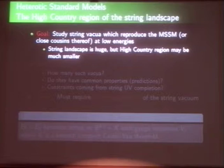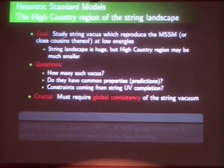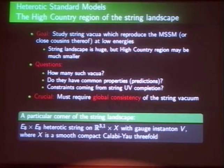Some of the questions are: how many such vacua? Do they have common properties? Can we make predictions? What are the constraints coming from the global UV completion? We are going to insist on global consistency of the string vacua — we're not looking for gauge theory solutions, we're looking for things that can be embedded in string theory. This is just one corner: the E8 cross E8 heterotic string on Minkowski space cross a Calabi-Yau.